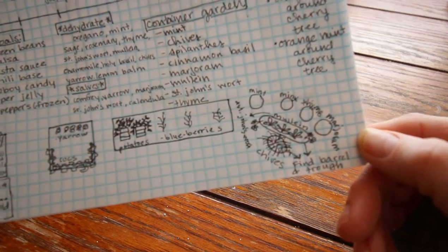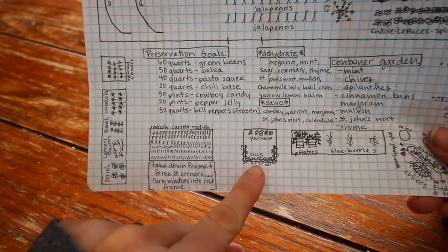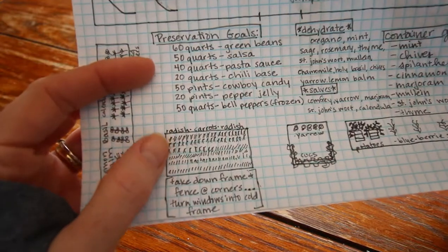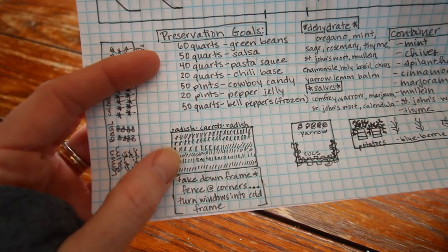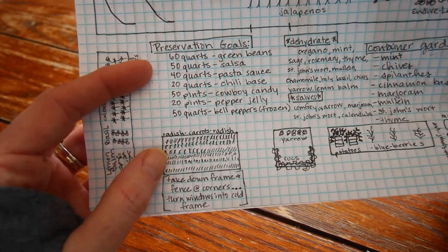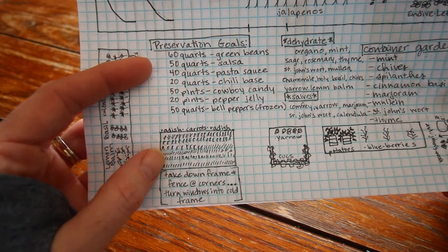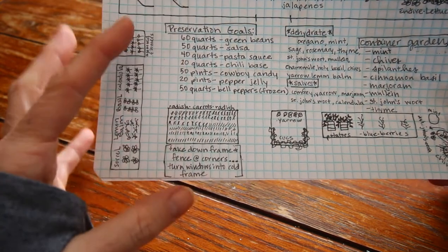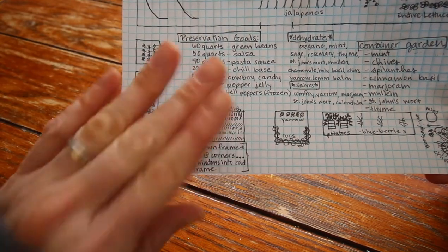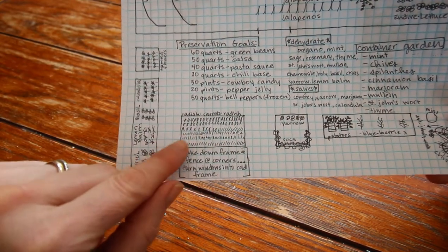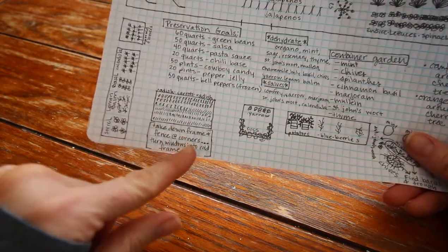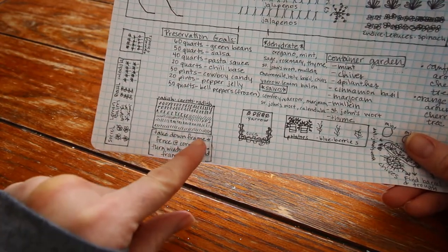This is thyme and marjoram. This is my 4x4 cucumber bed and I'm gonna put some yarrow there. This is the 4x8 raised bed that we have. I'm gonna take it down and use the windows and kind of reframe it differently so that I can hinge it down and it will be a different kind of cold frame.